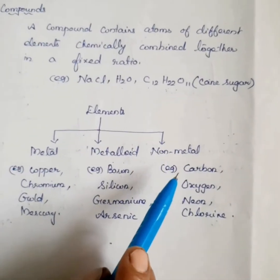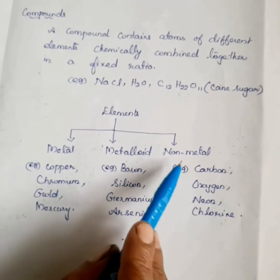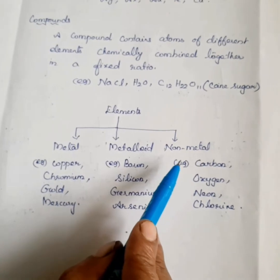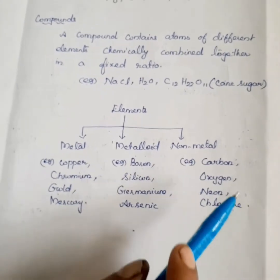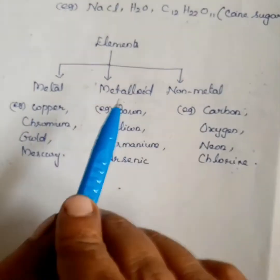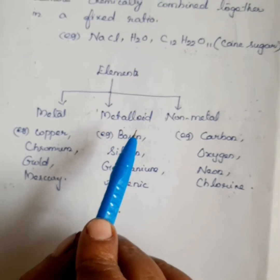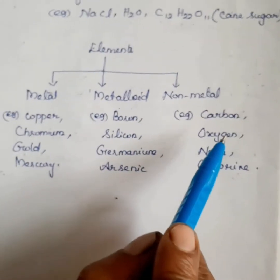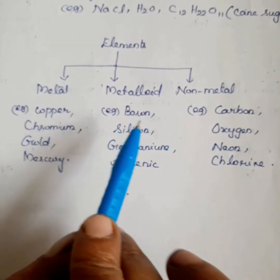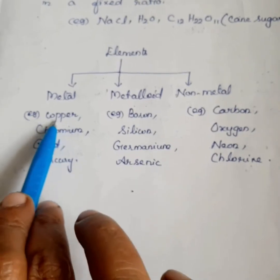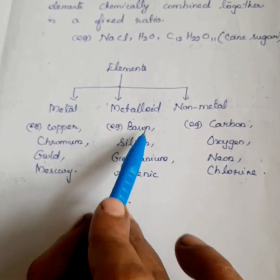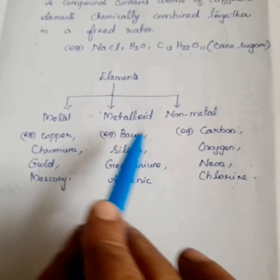Non-metals are poor conductors of electricity. Examples of non-metals are diamond, graphite, carbon, oxygen, neon, and chlorine. Metalloids are elements that have properties in between those of metals and non-metals. Metalloids are semiconductors of electricity — neither purely good conductors nor purely poor conductors. Examples of metalloids are boron, silicon, germanium, and arsenic.